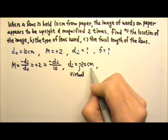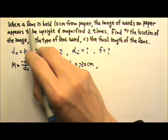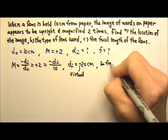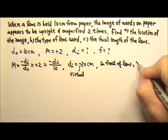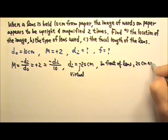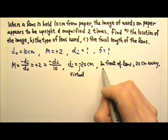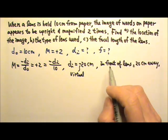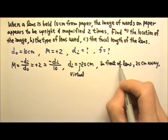Because it is a virtual image produced by a lens, and the lens lets light go through, that means if it is a virtual image, it must be in front of the lens. And it is 20 cm away. By in front of the lens, I mean it is on the same side as the words on paper. The image and the object are on the same side of the lens.